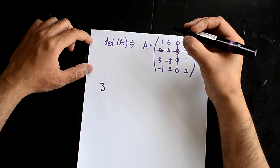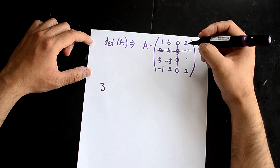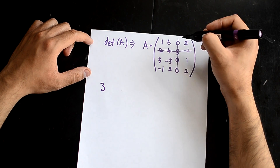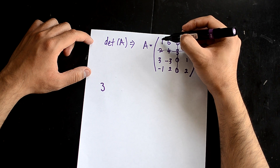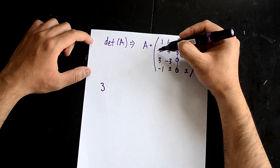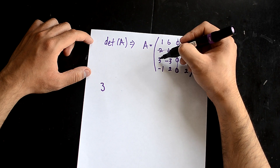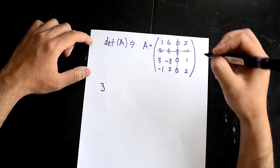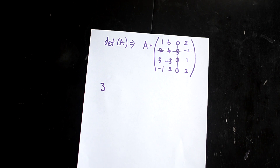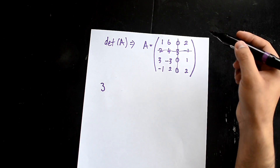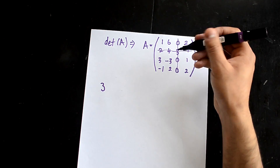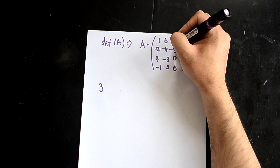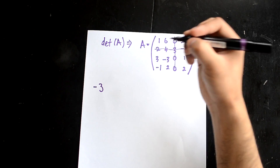If you remember from my previous video on finding the determinant of a matrix, everything next to each other alternates plus, minus, plus, minus. You start with a plus and it goes plus, minus, plus, minus — no positive and negative will be next to each other. A positive will only be next to a negative and vice versa. So if I go plus, minus, plus, then this position has to be a negative. So it would be minus 3 here.